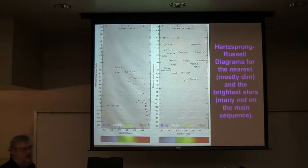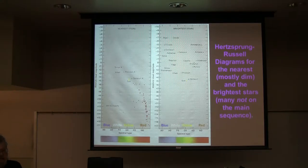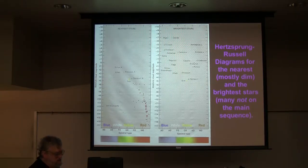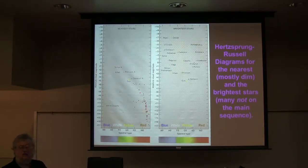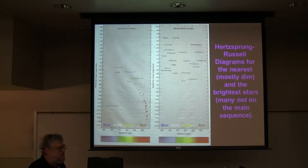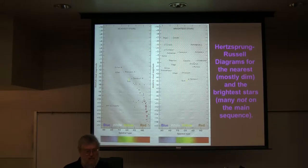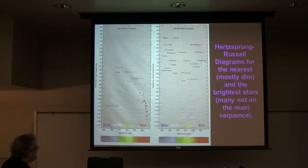If we take all the nearest stars — and those who have the Royal Canadian Astronomical Society handbook will find several pages about the nearest stars to our solar system — most of them are red dwarfs. The sun is in there, Alpha Centauri is almost a twin of the sun, but almost all are down on the lower right-hand part of the HR diagram. This tells us that, unless we live in a low-class neighborhood in the Milky Way, most stars are actually red dwarfs — very small stars.